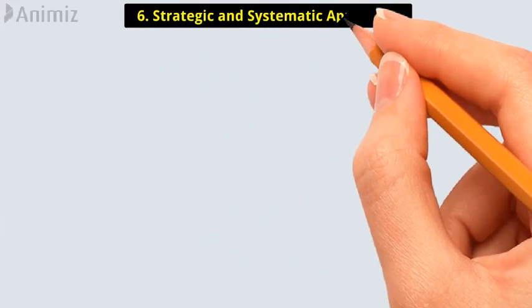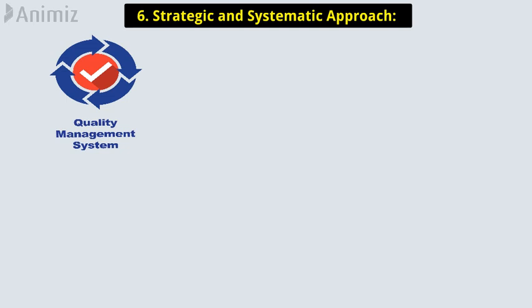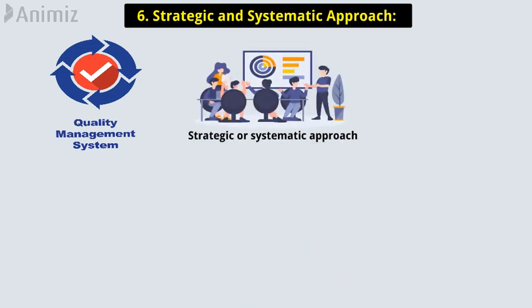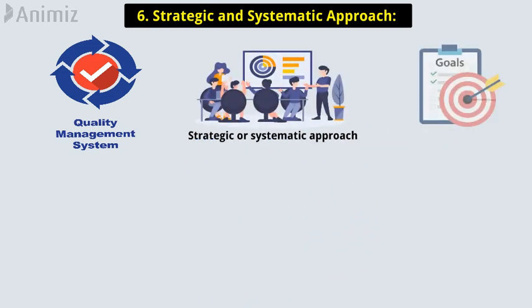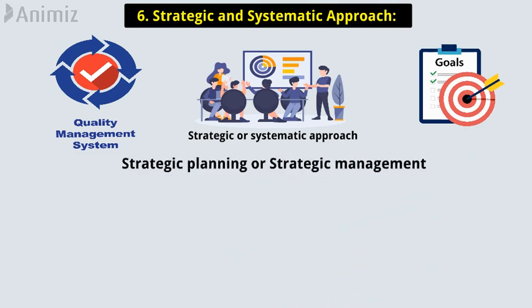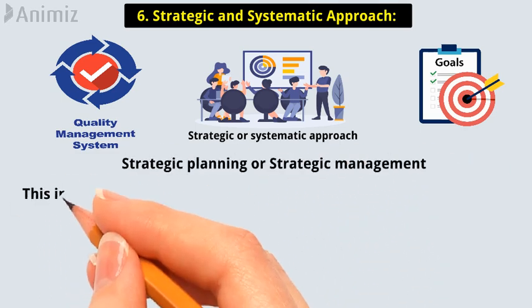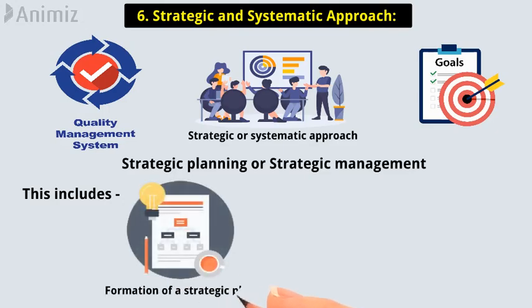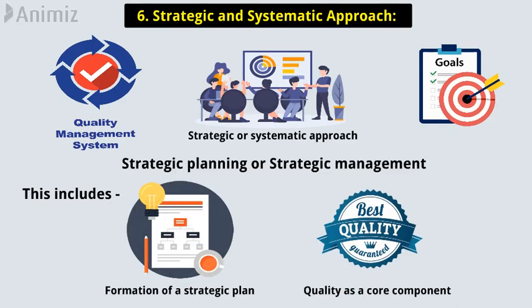Principle 6: Strategic and Systematic Approach. A significant part of the management of quality is the strategic or systematic approach to achieving an organizational goal. This process is called strategic planning or strategic management, and includes the formation of a strategic plan that combines quality as a core component.